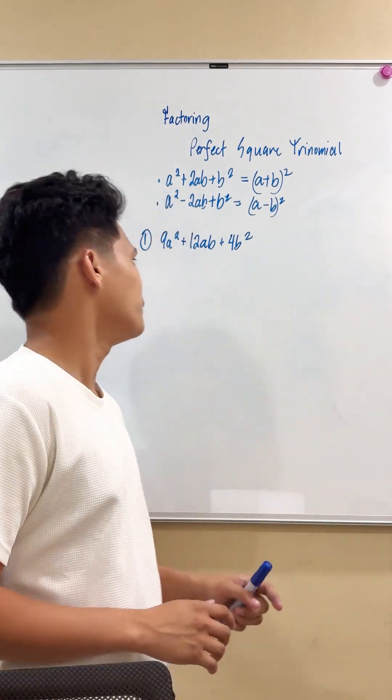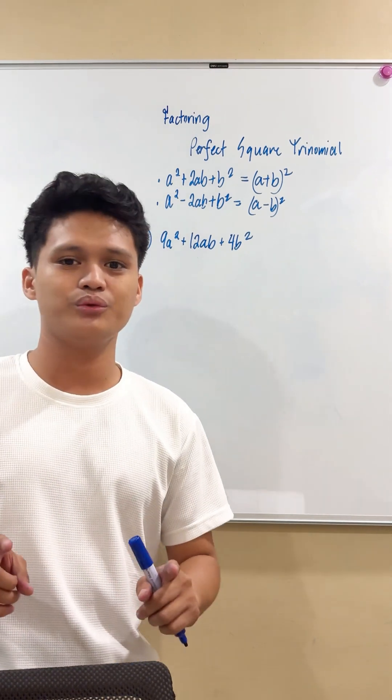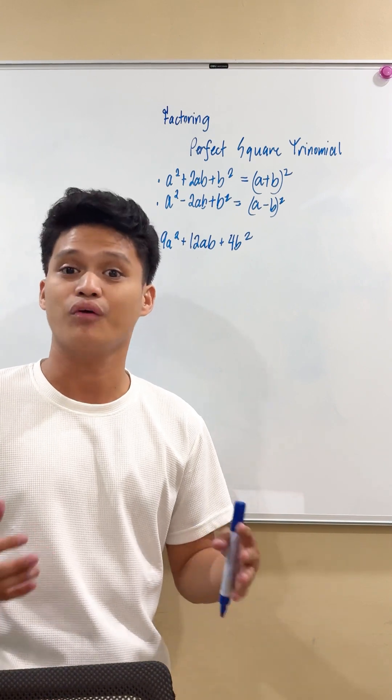So here's our example, which is 9a squared plus 12ab plus 4b squared. So the first thing we need to do is that we need to make sure that the first term and the last term actually is in the form of squares.